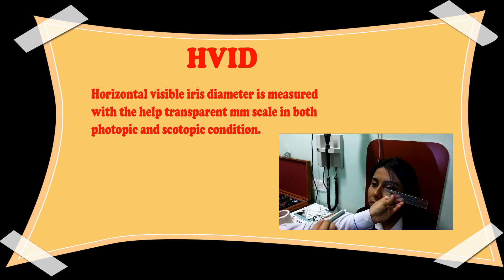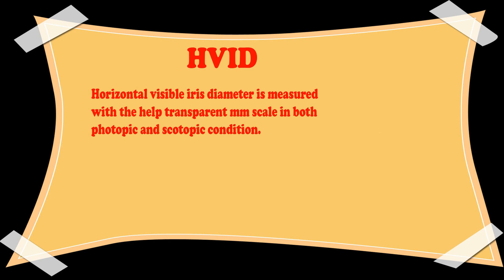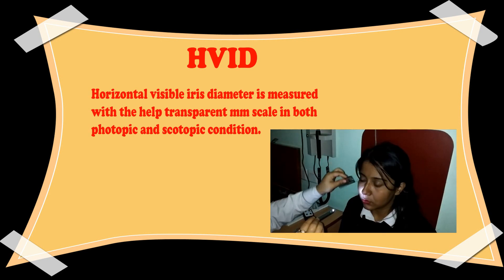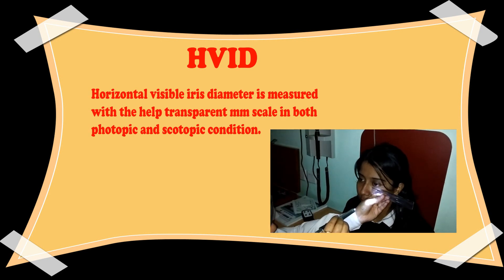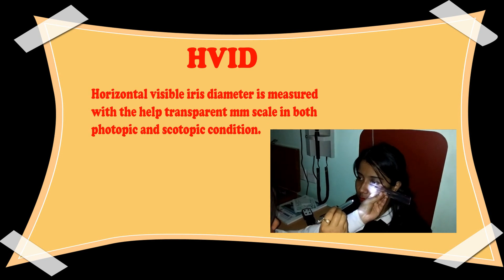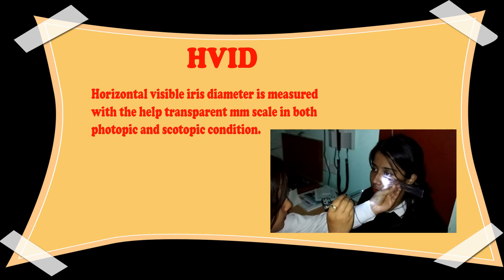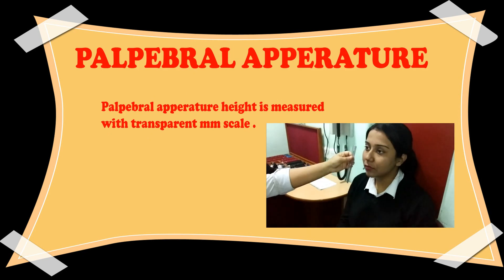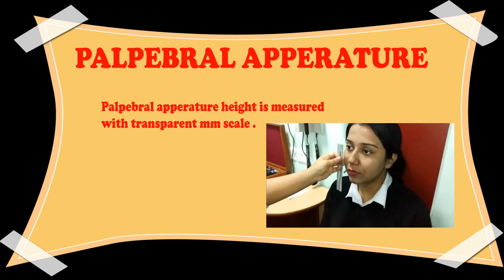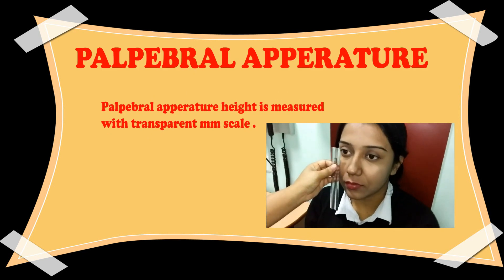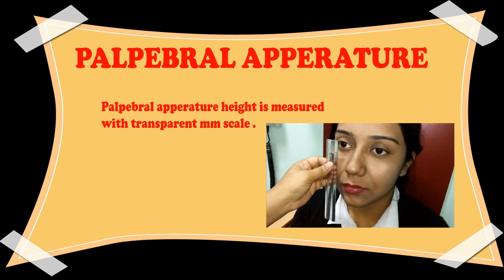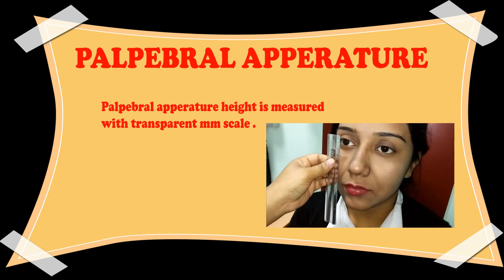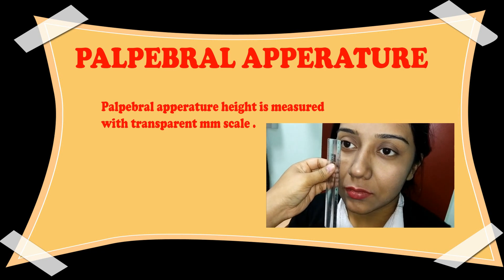For recording parameters, we measure the horizontal visible iris diameter (HVID) with the help of a transparent millimeter scale, both in photopic and scotopic conditions. Taking the average value and subtracting the HVID value by 2 gives the total lens diameter. Palpebral fissure height can also be taken for selecting lens diameter using a transparent millimeter scale.